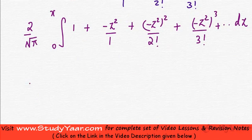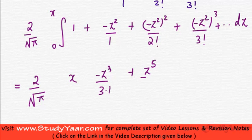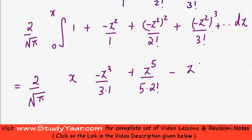Now if you integrate it, what you get is 2 upon root pi. Integration of 1 dz is z, then you have minus z squared which integrates to minus z cubed upon 3. Then you have (minus z squared) the whole square which is z raised to power 4, therefore you get z raised to power 5 upon 5 dot 2 factorial. Then the cube of a negative quantity gives negative z raised to power 6, so its integration is z raised to power 7 upon 7 dot 3 factorial, and so on.